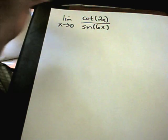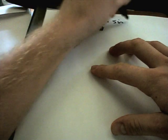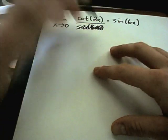Whoops, I wrote that down wrong. This should be multiplied by sine of 6x. I was going to say, it's not going to be a product then.